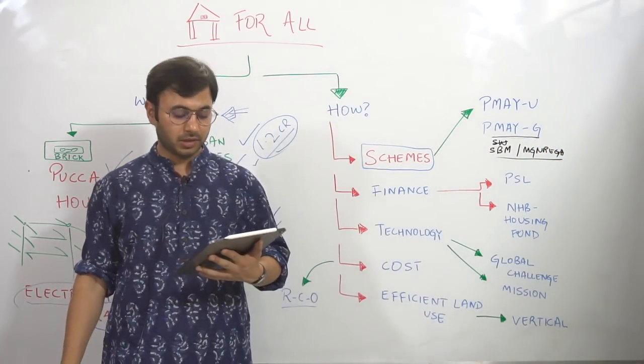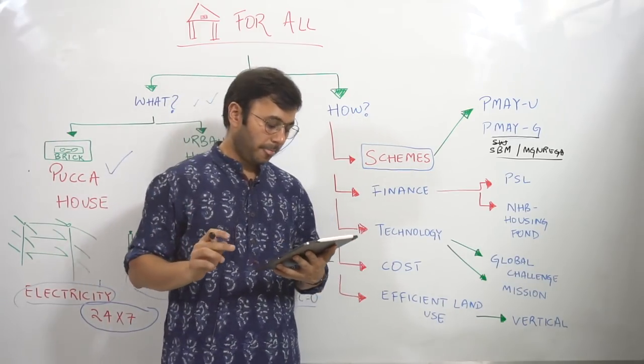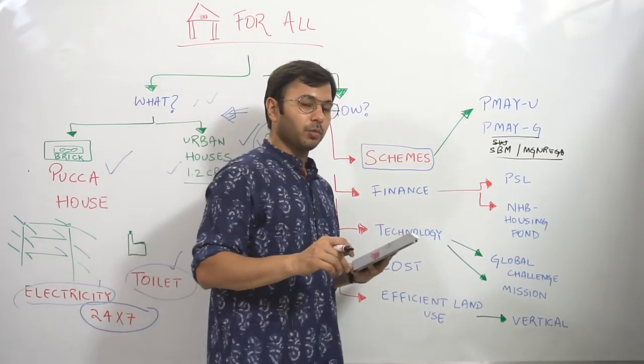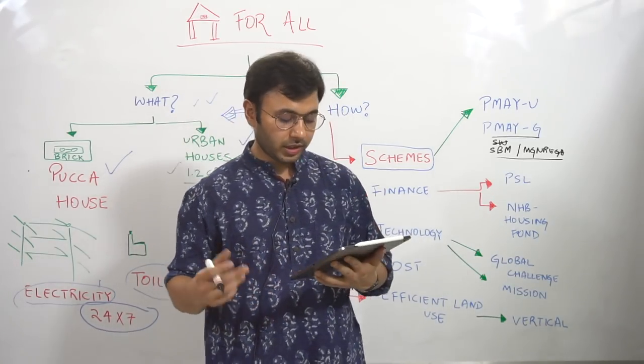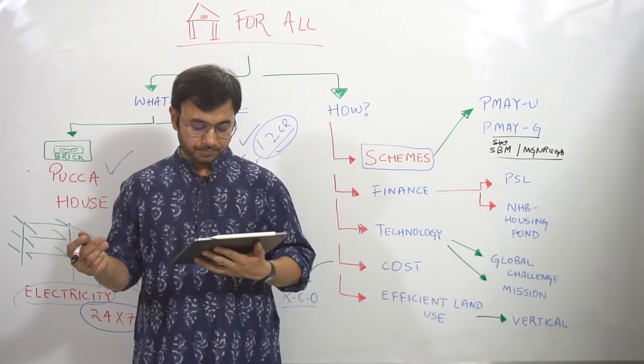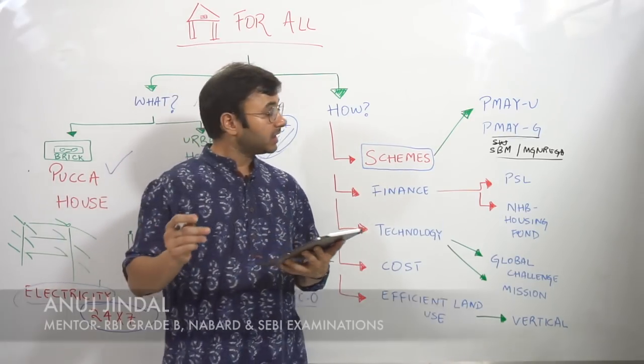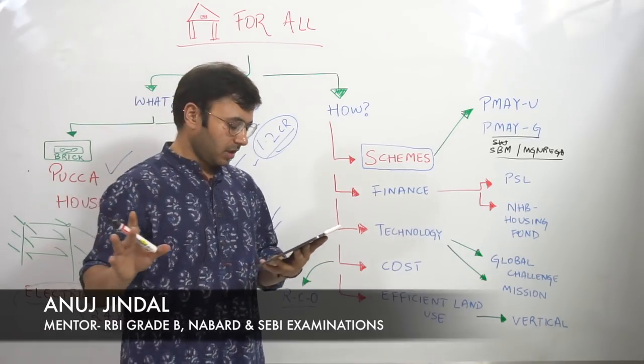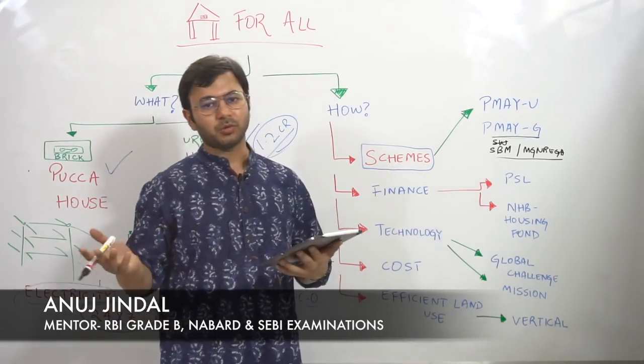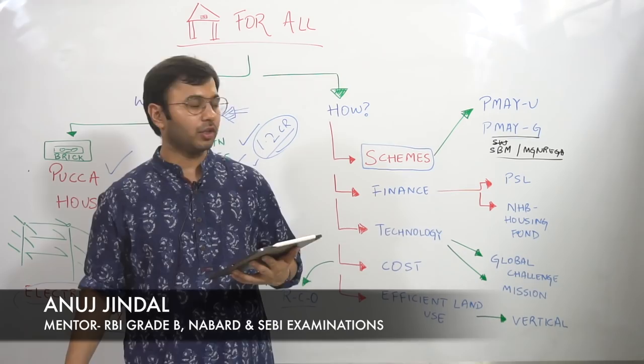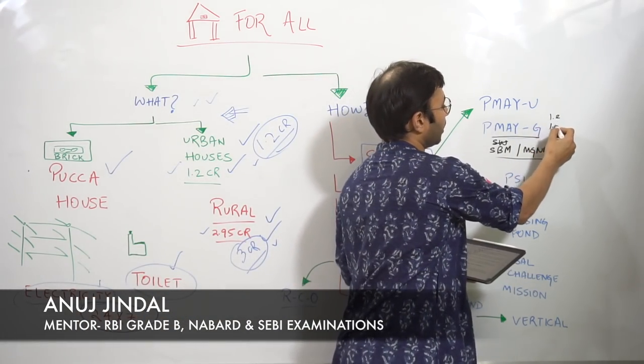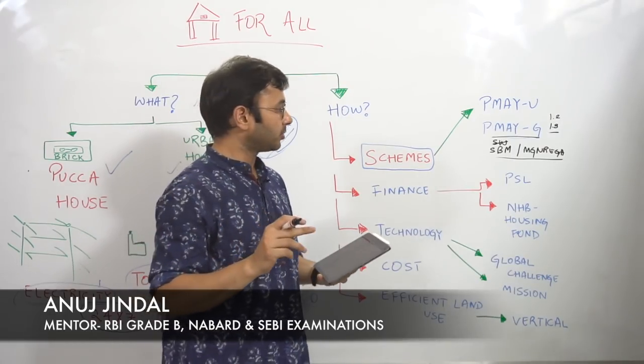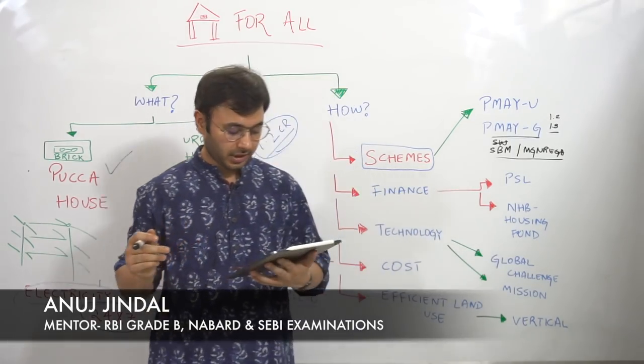So this is something that you need to remember. The Gramin part, not the urban part. What is the unit assistance? 1,20,000 in plain areas and 1,30,000 in hilly areas or in border areas. In 2016-17, 32 lakh houses were constructed. Not important. And by the end of March, whatever houses we have constructed, that is also not important. What is the unit assistance? 1.2 and 1.3. Under which ministry does it lie? It has now been converged with Swachh Bharat Mission and MGNREGA.